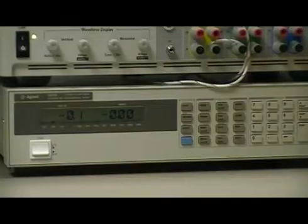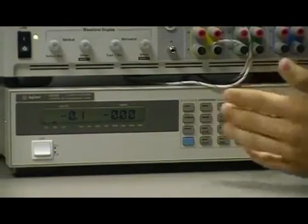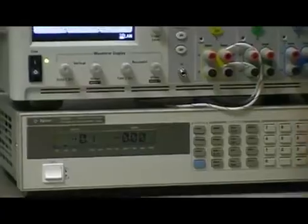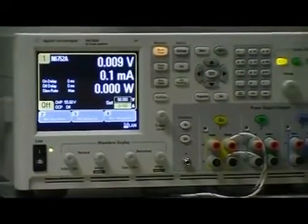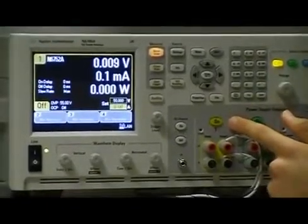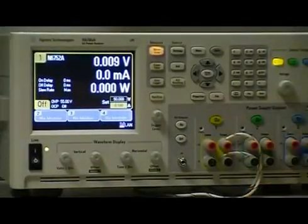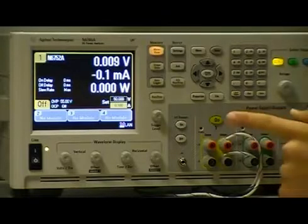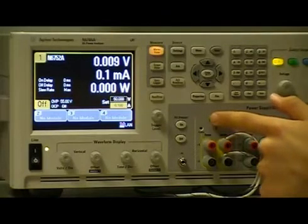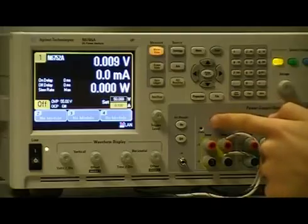This was that uncertain zone of the graph of CV and CC. And you will see that when I press the on button, the power supply will have to decide which region it will go to and it might get a little uncertain. So I will press the on button now.